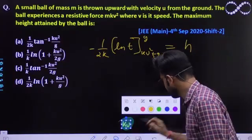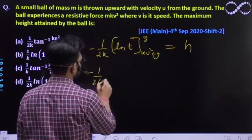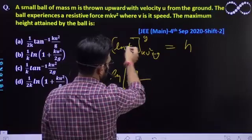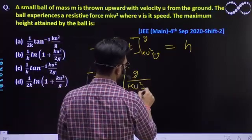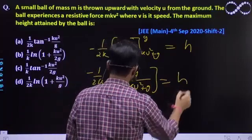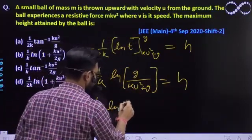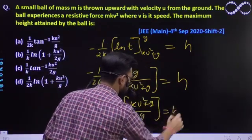Now solve this further, it's very easy now. So it would be equal to 1 by 2k, put the value quickly, ln of g. Then put this value in negative, so this will divide, giving us ku² plus g. It equals height. The negative sign will go inside.